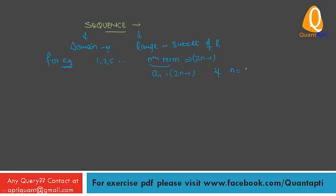If N equals 1, then A1 equals 2×1-1 = 1. If N equals 2, then A2 equals 2×2-1 = 3. For N equals 3, A3 equals 2×3-1 = 5. So the sequence can also be written as A1, A2, A3, and so on AN, where Nth term is 2N-1. The value of N starts from 1, 2, 3 because the domain of a sequence is N.